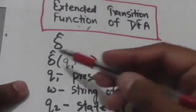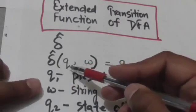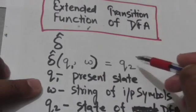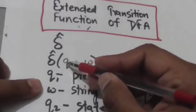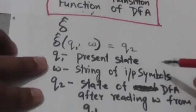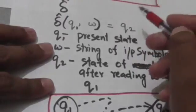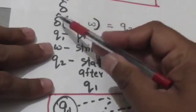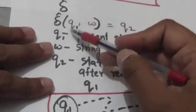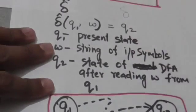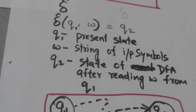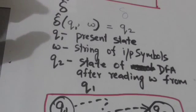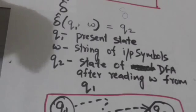The output of the extended transition function for state q1 and a string of input symbols w is q2. It means when the machine is in state q1 and it reads a string of input symbols w, it will jump to state q2. This transition function is different from the normal transition function — the normal transition function gives the transition for a single input symbol, while the extended transition function gives the transition for a string of one or more input symbols.